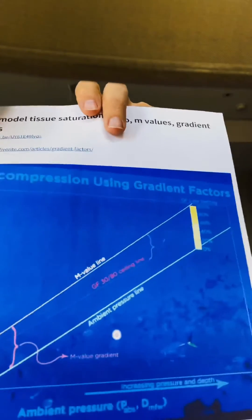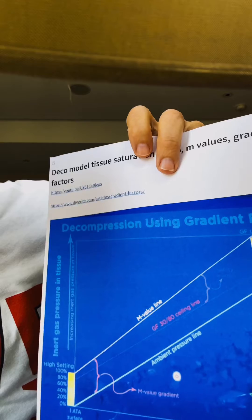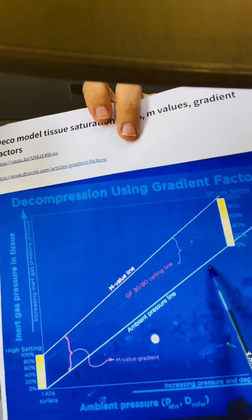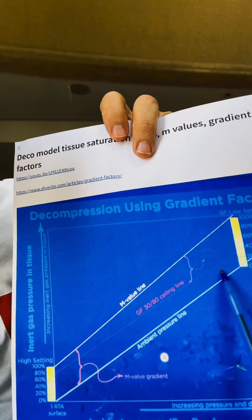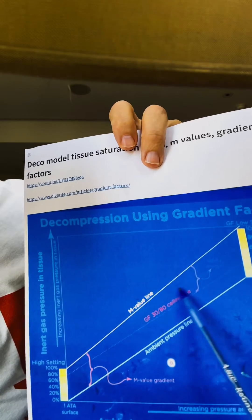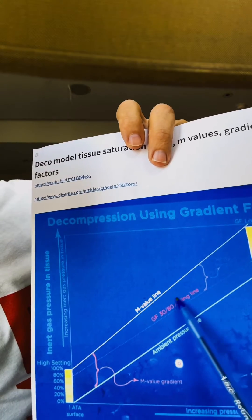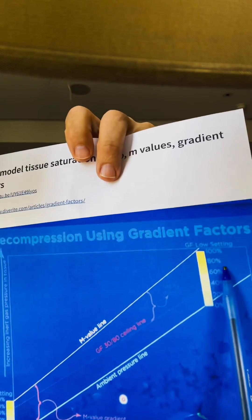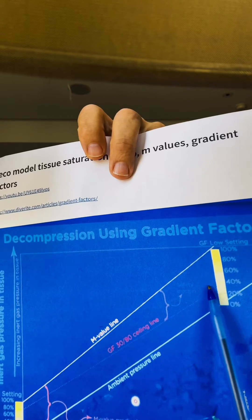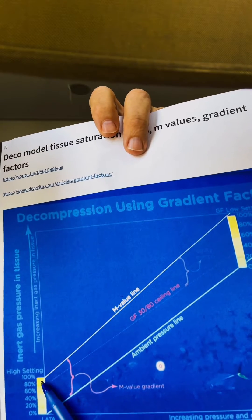This happens to be set to 30/80 — I'm not recommending that, just telling you this is what it's set to. Bottom line: as you're ascending, if you ascend to any point where your leading tissue becomes 30% saturated, you would bump into this new line that we drew and have to stop until you get to 30% or less. And as you're moving towards the surface, it's moving more towards your high setting. The low setting applies at the deepest point in the dive, and as you're ascending you're moving more and more towards your high gradient factor setting.